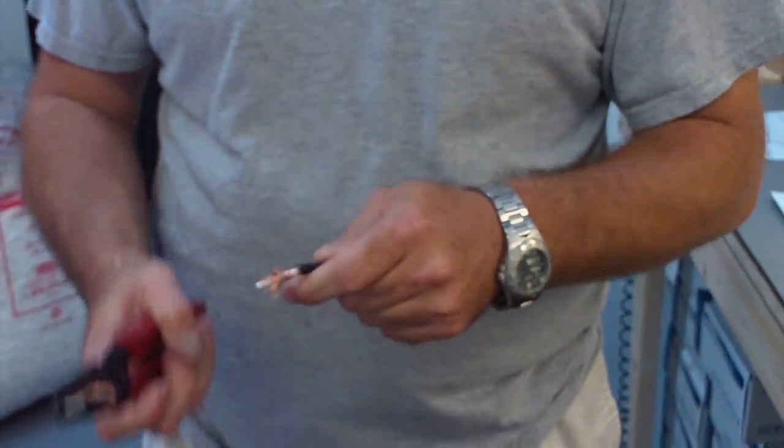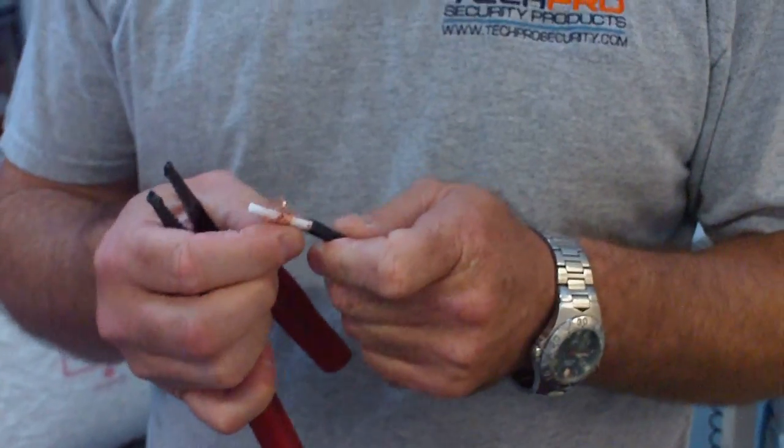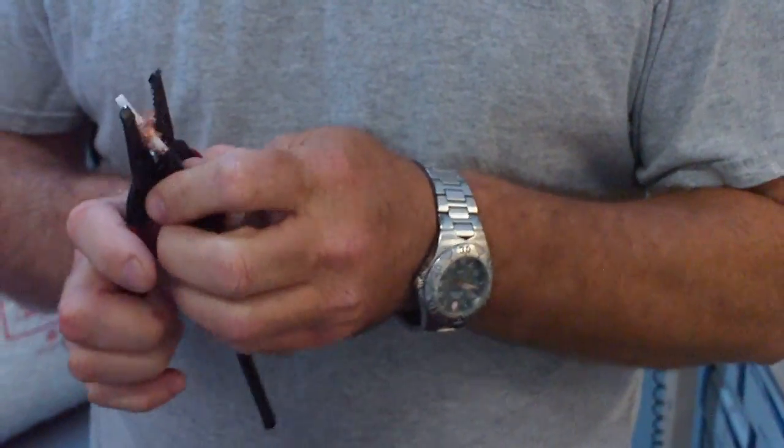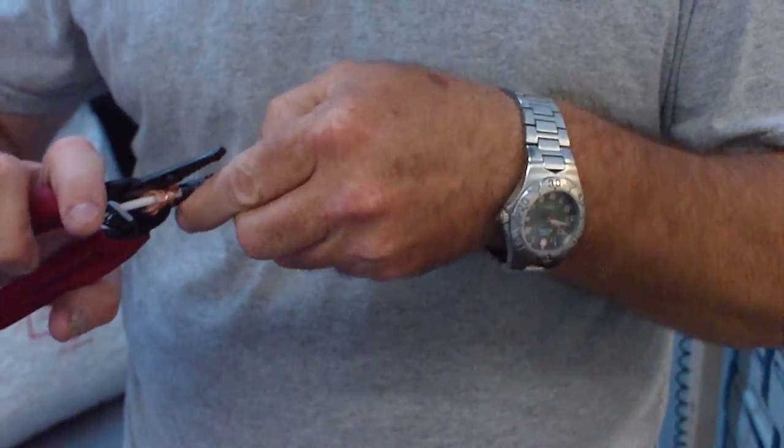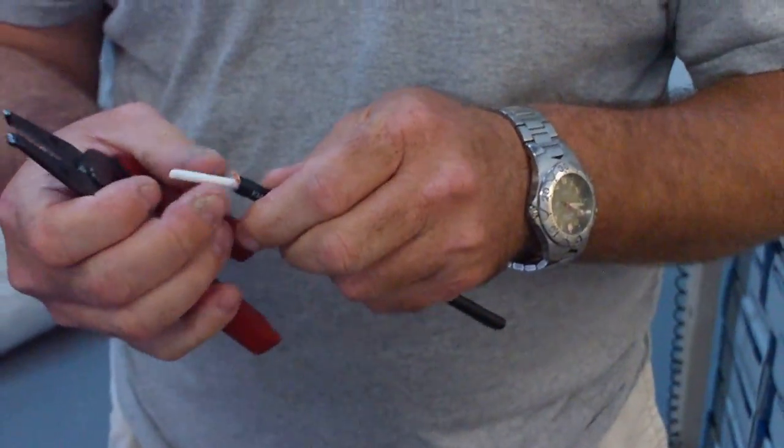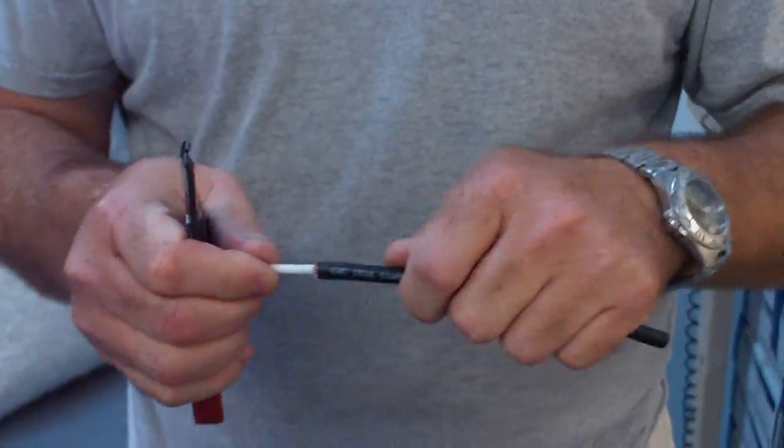First, you slice off the outer sheath, then you'll notice that there's a white sleeve inside, and you will cut the white sleeve inside, exposing the copper inside the cable.